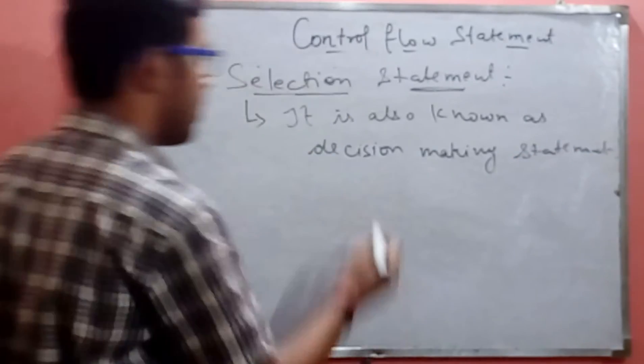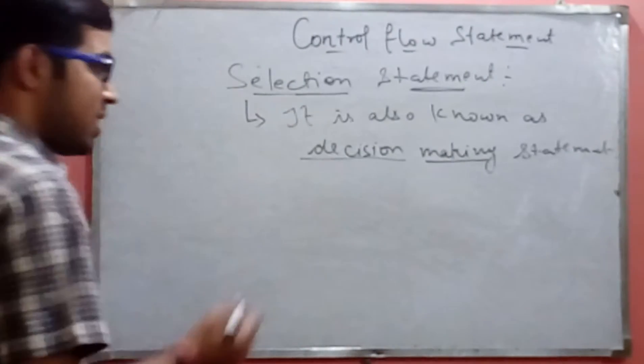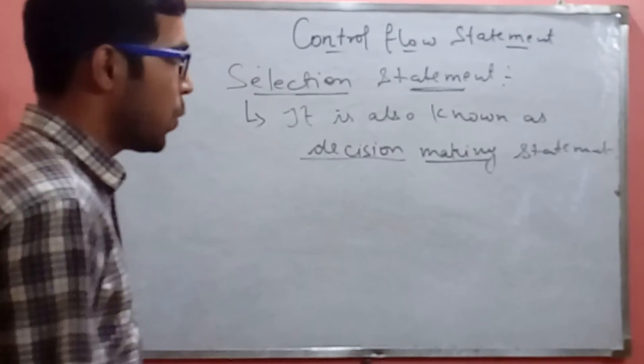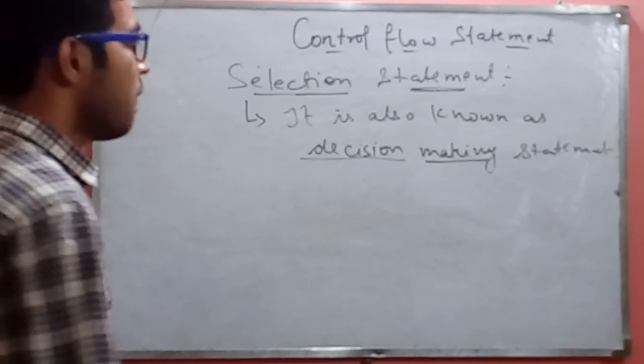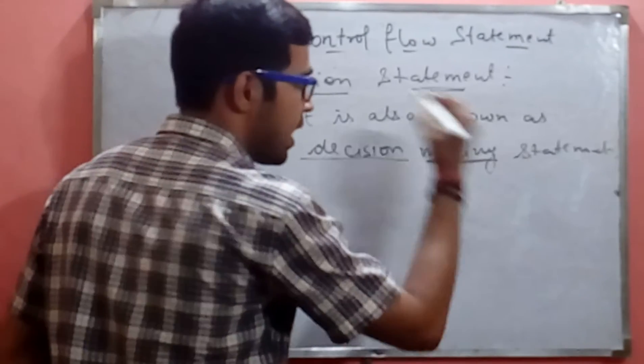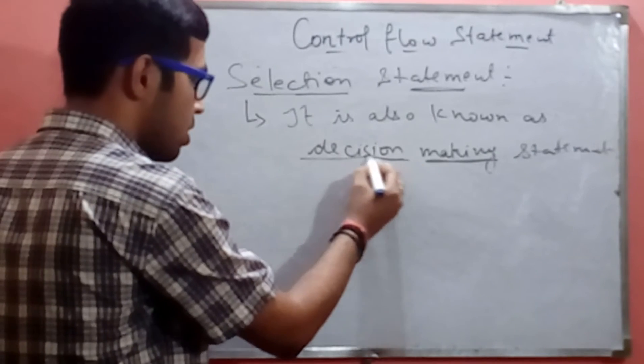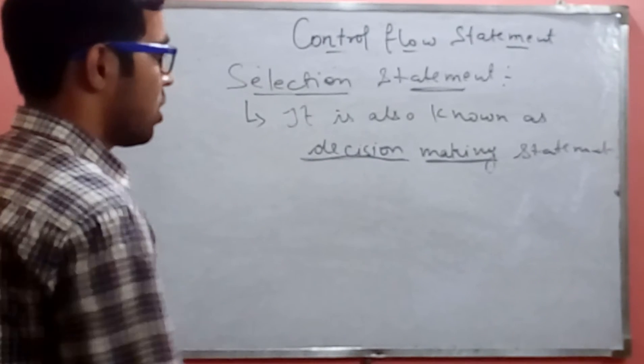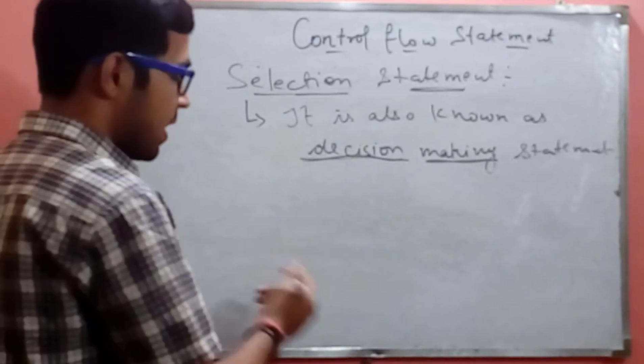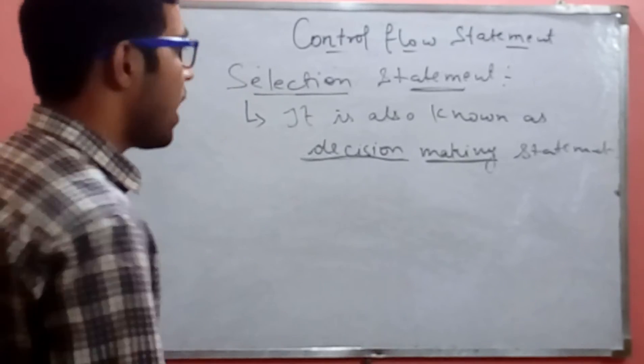Selection statement is a decision statement. If the decision is true, then the corresponding block will execute. Otherwise, the block will not execute. It means we have a condition. If the condition is true, then the corresponding block will execute. Otherwise, the block will skip and move.